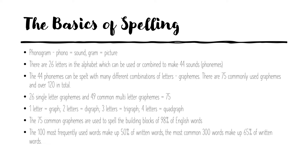A few basics: there are 26 letters in the alphabet and they can be combined to make 44 different sounds. Those sounds are called phonemes, again from the word phono meaning sound. The 44 phonemes can be spelt in many combinations of letters, and those combinations of letters are called graphemes. There are 75 commonly used graphemes and over 120 in total.